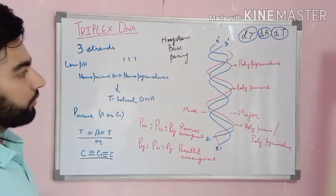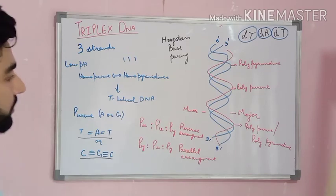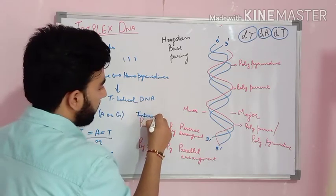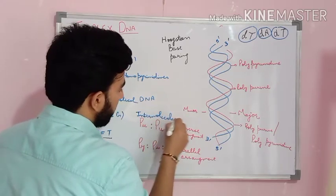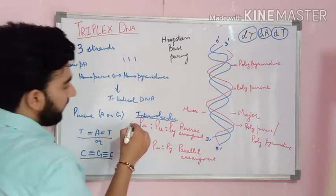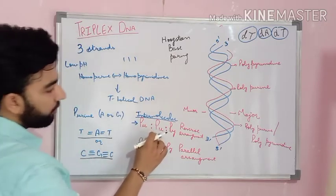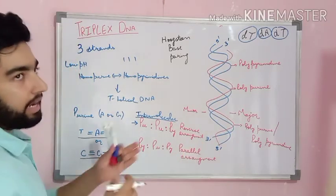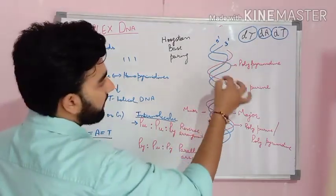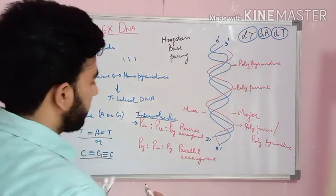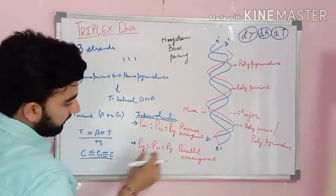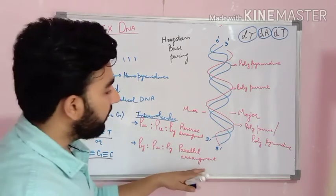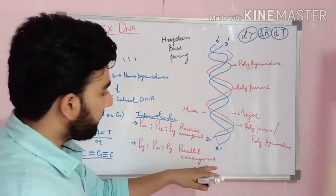There are two more things: intermolecular as well as intramolecular base pairing. In the intermolecular case — if the arrangement is purine to purine to pyrimidine — the structure will look like a reverse or anti-parallel arrangement, with the third strand arranged anti-parallel. If the intramolecular arrangement is pyrimidine to purine to purine, then the structure arranges in parallel orientation.